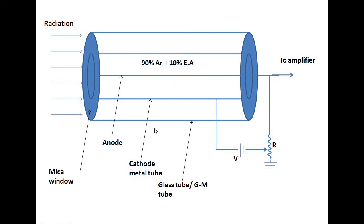This is the schematic of the Geiger-Müller counter. Consider a glass tube, also known as a GM tube, along with the electronic circuit. This electronic circuit is used to amplify the current. Now, this glass tube or GM tube consists of a metal case or metal tube which is enclosed in the glass tube. This metal tube acts as a cathode.